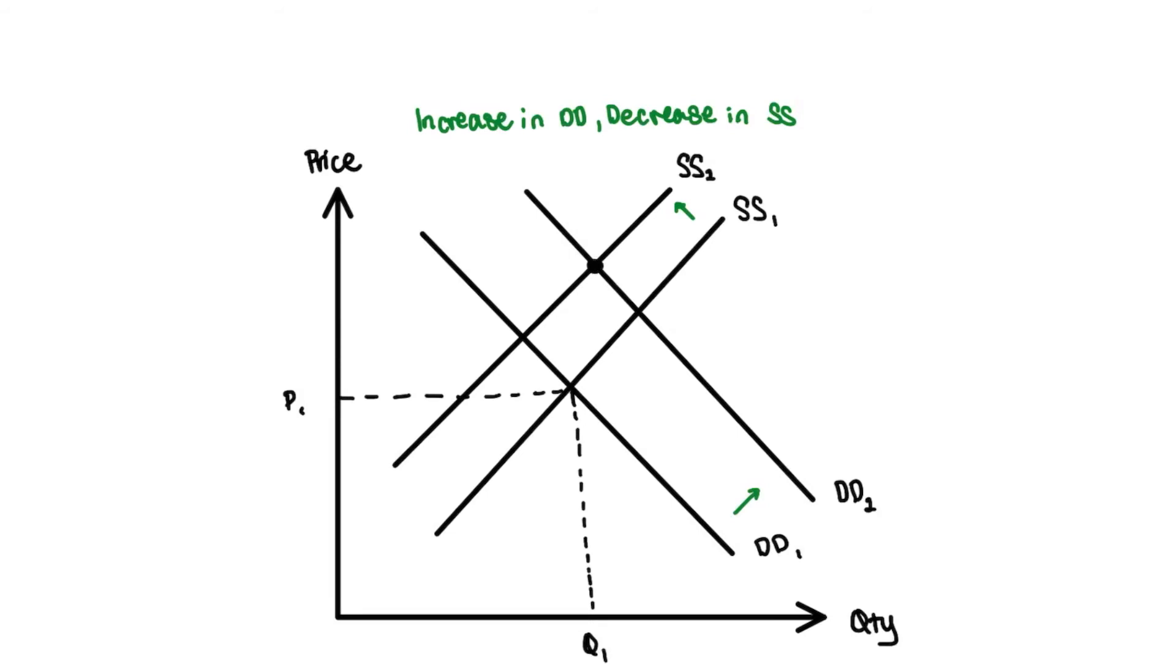Now let's locate it. It's at this point here where SS2 and DD2 actually intersect. This would be our new equilibrium quantity as well as our new equilibrium price. Go ahead and mark those down as well. That's all you need to do, so it's actually very simple. Now we're just going to draw our new price.